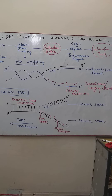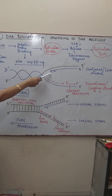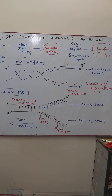There is a lagging strand because DNA polymerase enzyme can only perform synthesis in the 5' to 3' direction. So it can work on only one strand continuously; it cannot work on both strands simultaneously in the same direction. That is why there is one leading strand and one lagging strand.